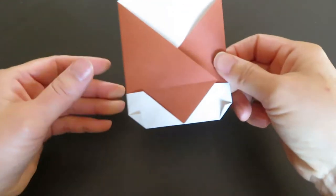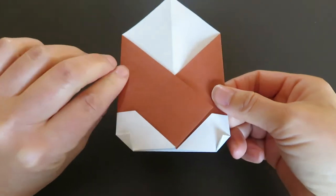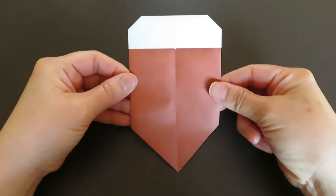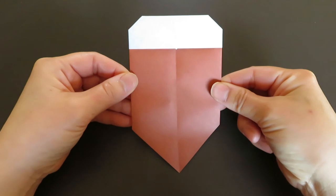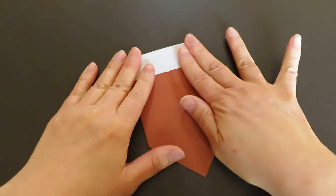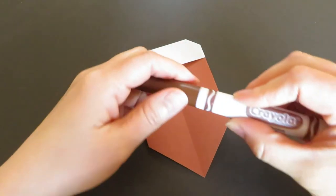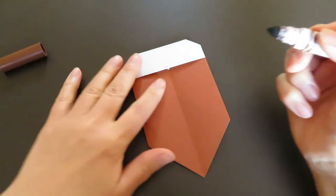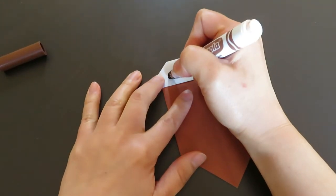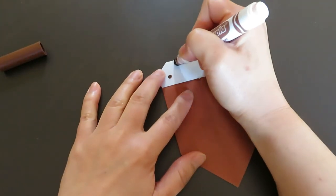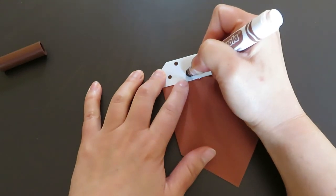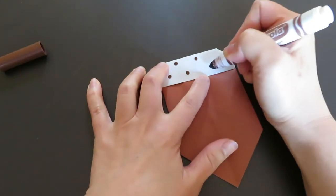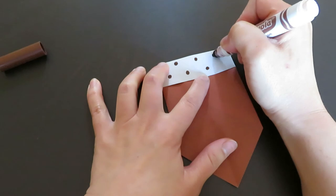And if you flip it over, ta-da! It's an acorn. Now you need to add the dots with markers, and it looks more like an acorn.